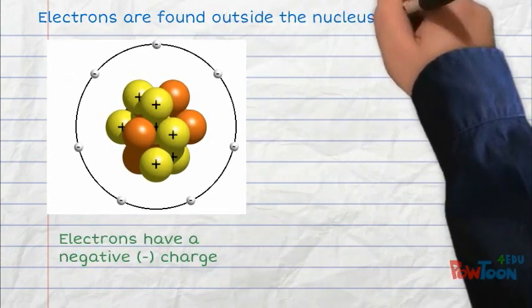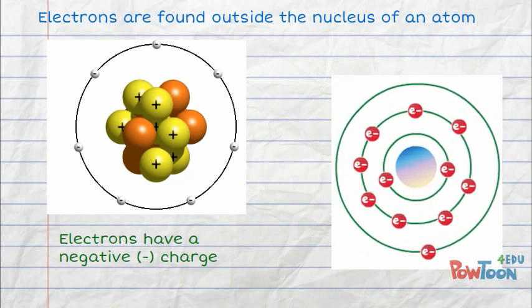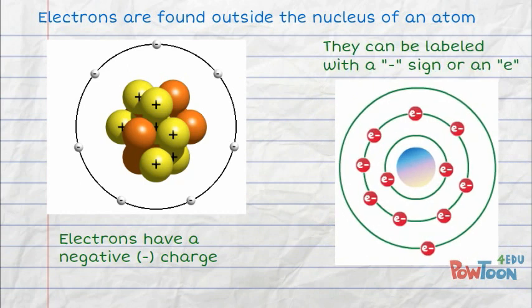Electrons are found outside the nucleus of an atom. Electrons have a negative charge. They can be labeled with a minus sign or an E.